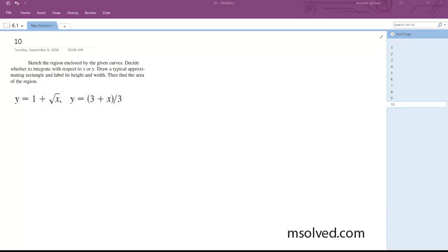So first thing we want to do is find the intersections points. We're going to set these equal to each other: y equals 1 plus root x, y equals 3 plus x over 3. So I'm going to multiply by 3 across here so I get 3 plus 3 root x is equal to 3 plus x.